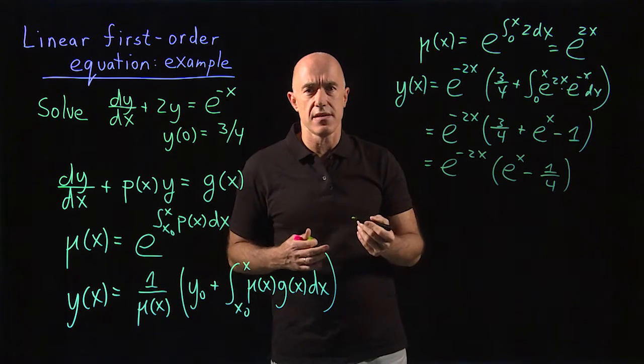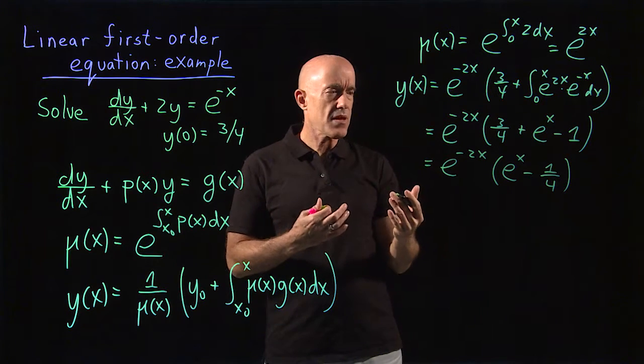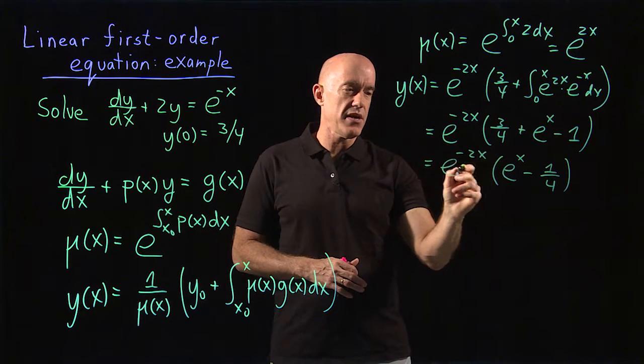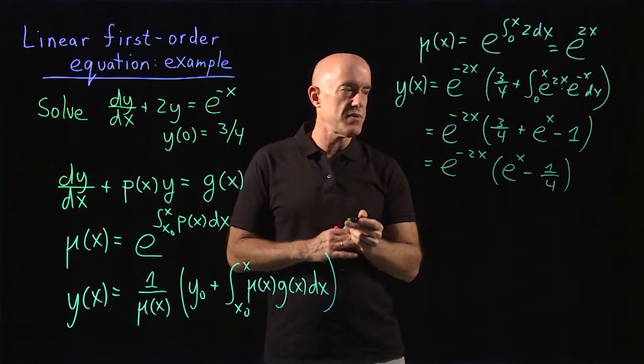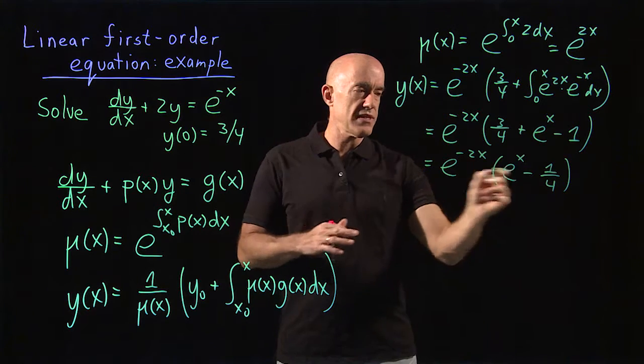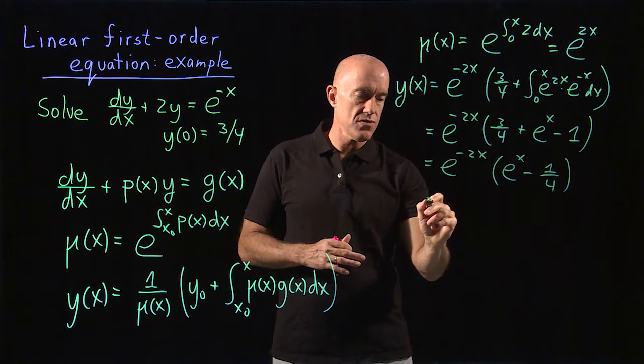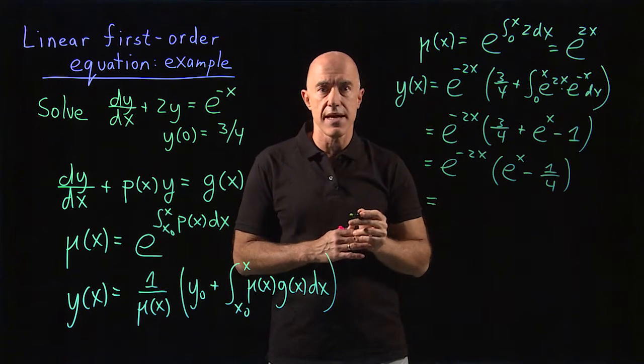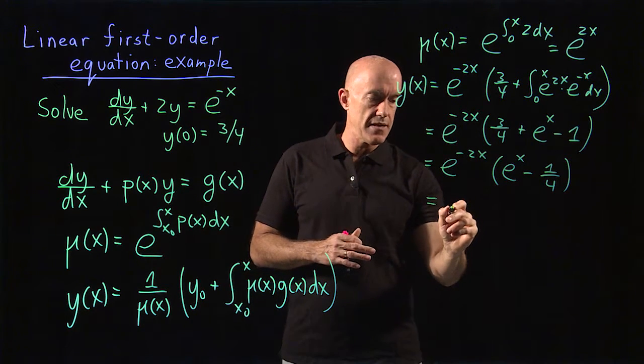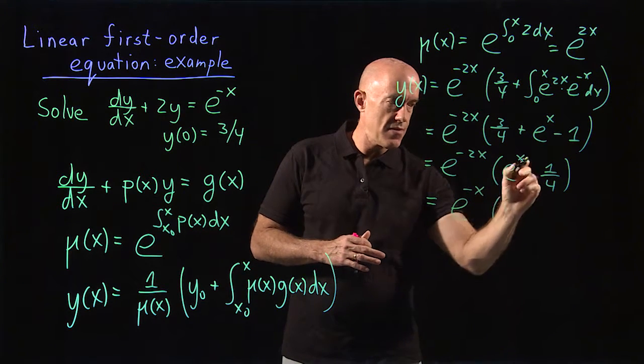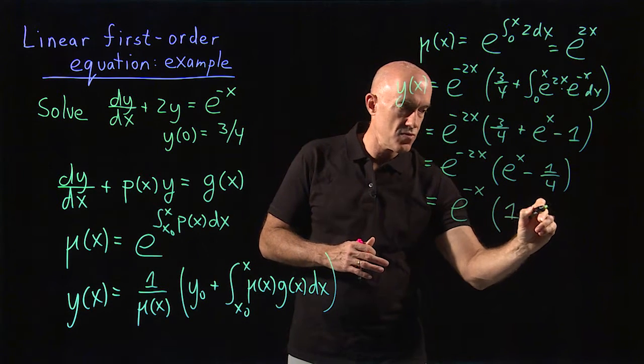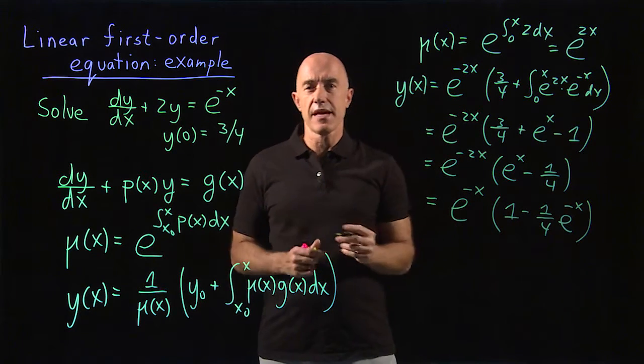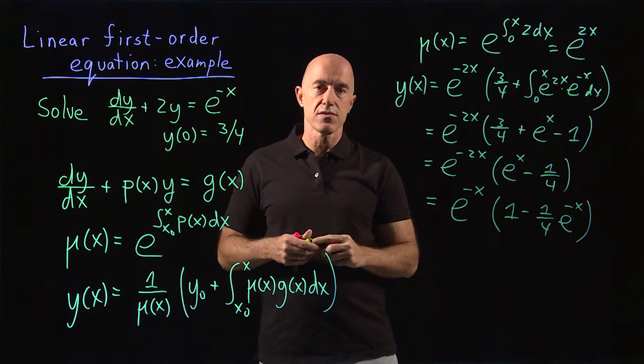But if you want to write this in a more transparent way, you really don't want a growing exponential multiplied by a decaying exponential. So to make this cleaner, you can multiply through by e^(-x). So we get e^(-x) and then we have 1 minus 1/4 e^(-x). And I think that's the cleanest way to write this solution.